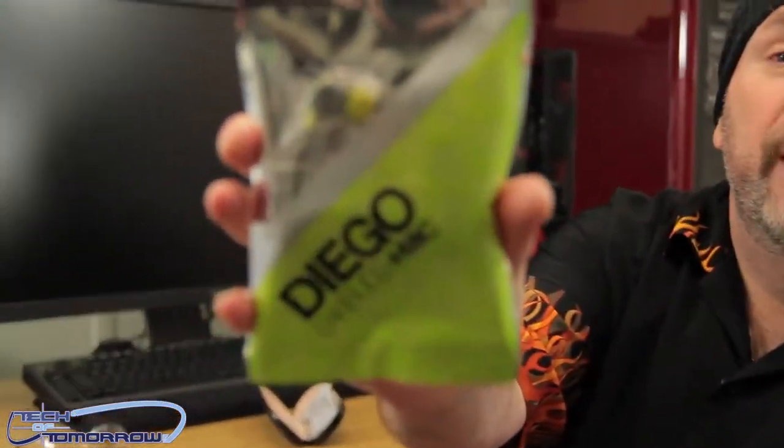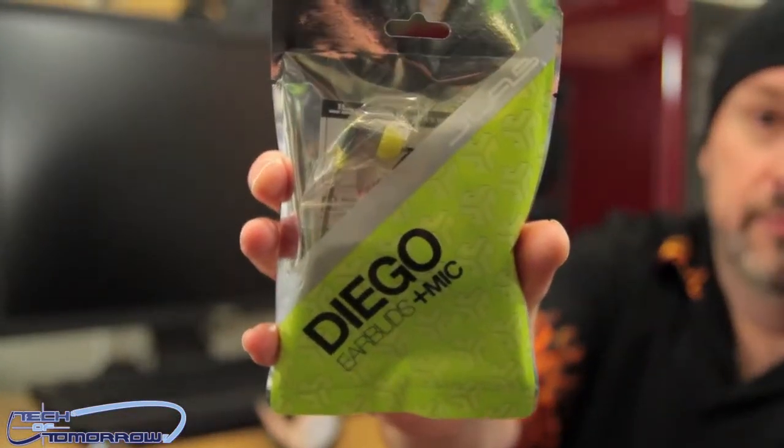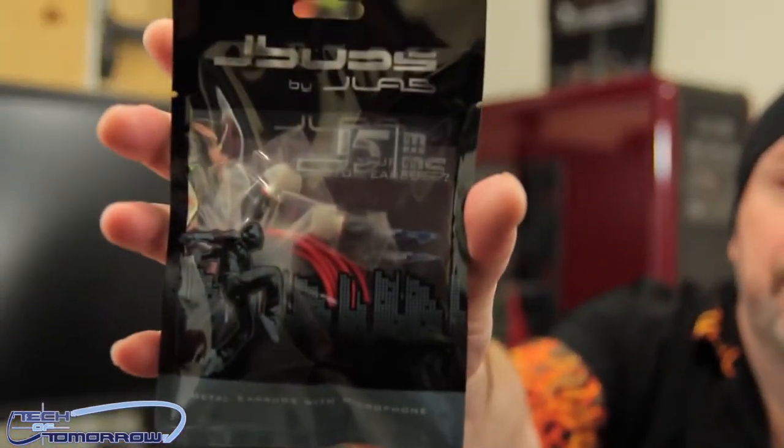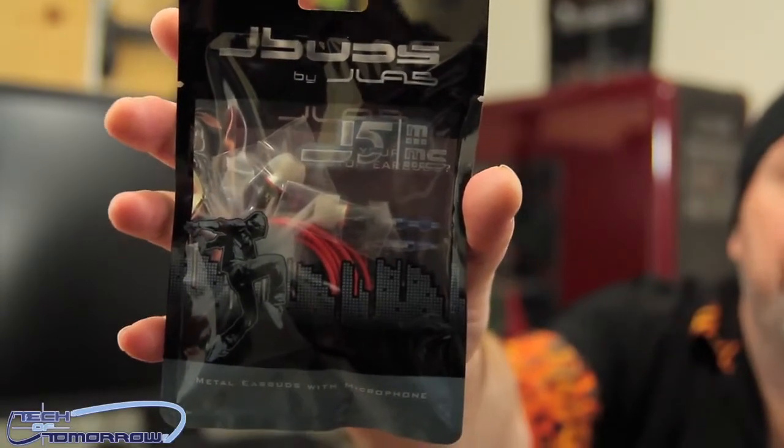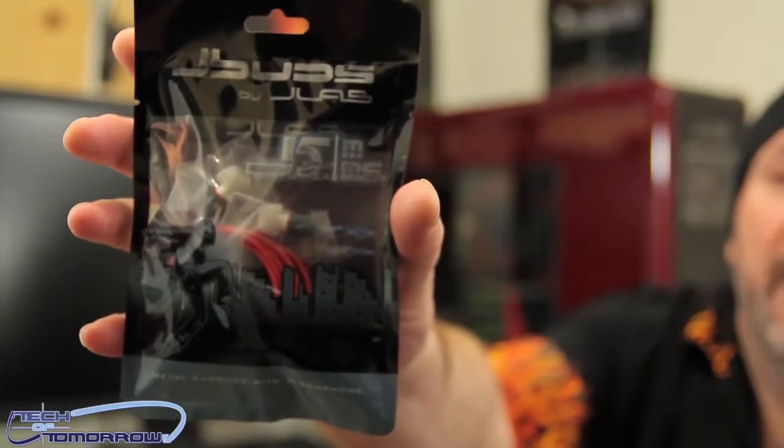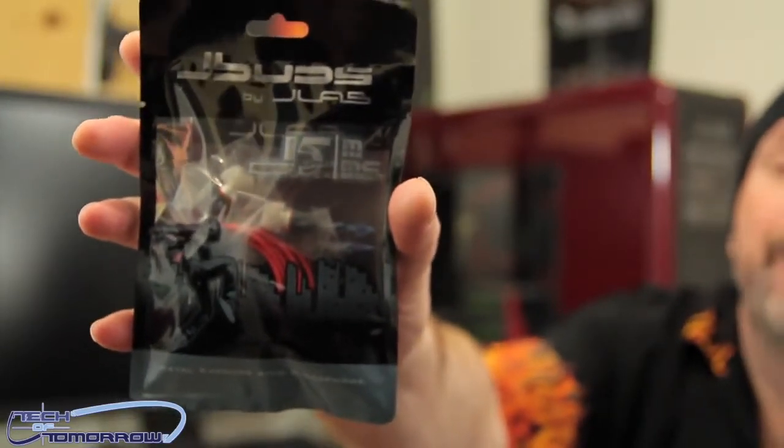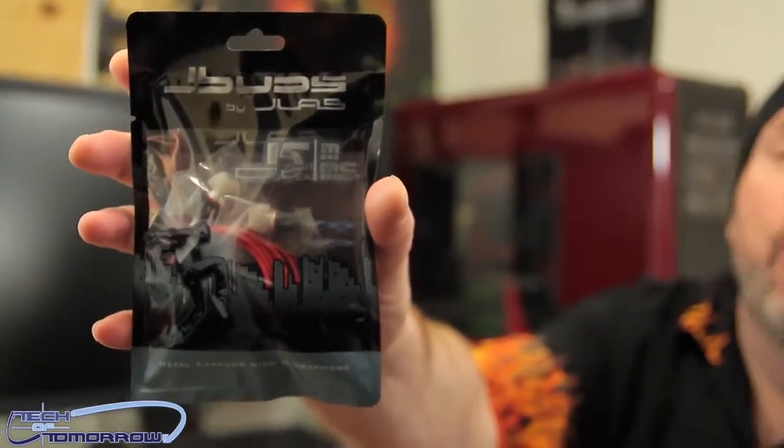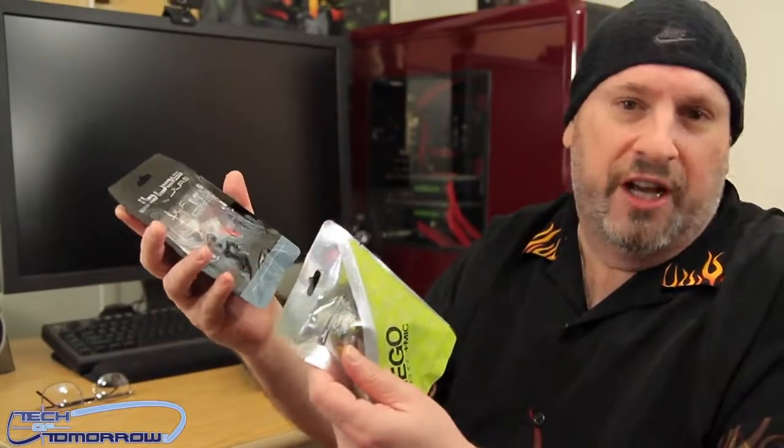These guys are based in San Diego. The first one I have up right here is the Diego earbuds. The second one I have are the J Buds by J Lab. J Lab is the company behind it all, they're the people doing all the design, all the packaging, and they have all kinds of different products. They actually had a booth full of all kinds of stuff including over-ear headphones, little speaker boxes, cool stuff.